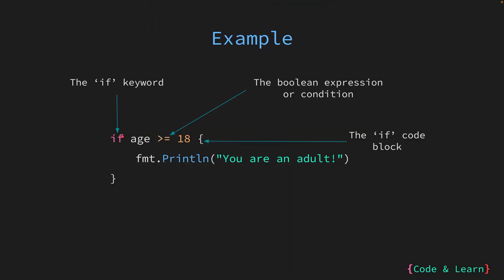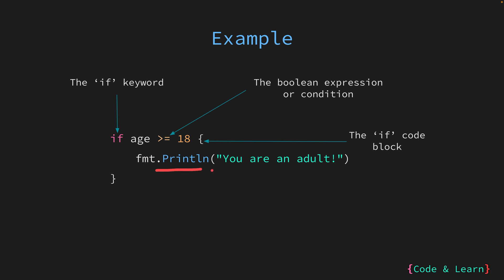As you can see in the example, we define the if statement with the if keyword followed by the condition. Here the condition evaluates whether the variable age is greater than or equal to 18. If this condition is true, the code block following it — that is the code within the curly braces — will be executed. This code block only has one statement: fmt.Println("you are an adult"). So in our case, if age is greater than or equal to 18, we will have "you are an adult" printed to the console. If the condition is not true, nothing will be printed to the console.